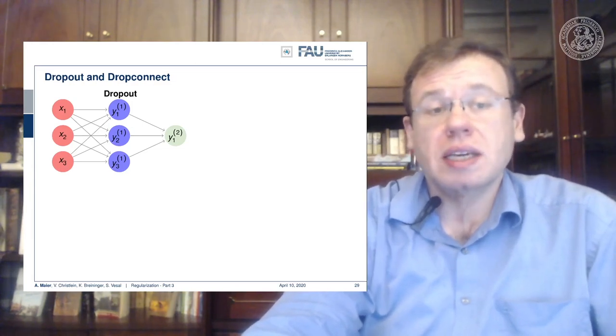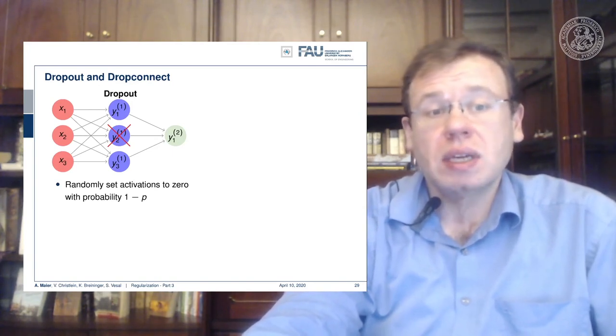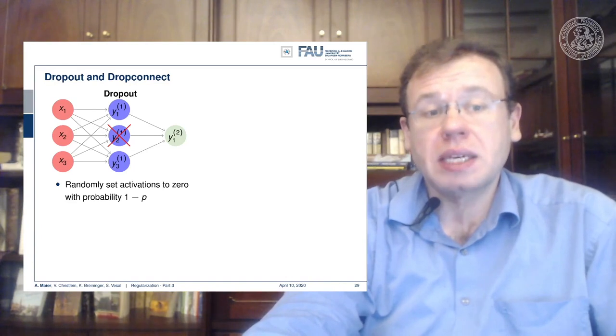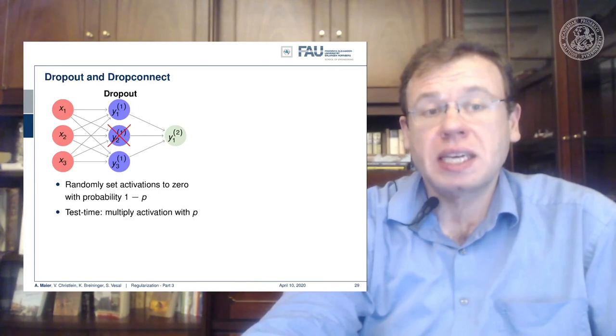And dropout is essentially the idea that you randomly kill some of the neurons and just set them to zero. So you select a probability p and you randomly then set activations to zero with probability one minus p. Then during test time, of course, you have to multiply all of the activations with p because otherwise you would have a too high activation in the next layer. So you have to compensate for this dropout effect at the test time.